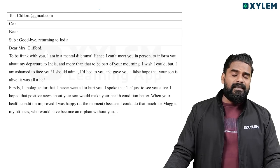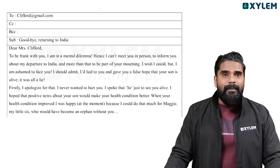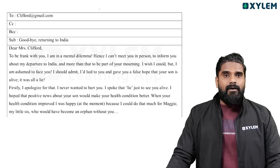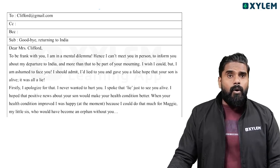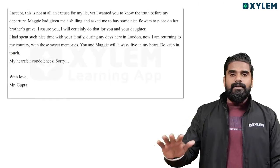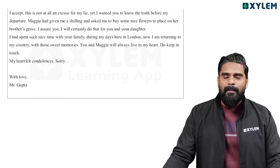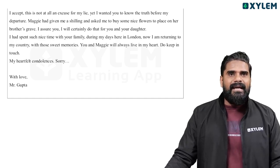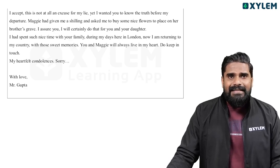I never wanted to hurt you. I spoke that lie just to see you alive. I hoped that positive news about your son would make your health condition better. When your health condition improved, I was happy, because I could do that much for Maggie, my little sister, who would have become an orphan without you. I accept this is not at all an excuse for my lie. I yet want you to know the truth before my departure.